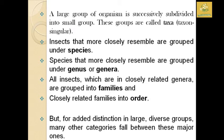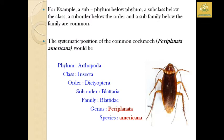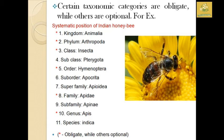For example, the American cockroach — Periplaneta americana — has a subphylum below the phylum, a subclass below the class, and a suborder below the order, as well as a subfamily below the family. The systematic classification of the American cockroach is: Phylum Arthropoda, Class Insecta, Order Dictyoptera, Suborder Blattaria, Family Blattidae, Genus Periplaneta, Species americana.